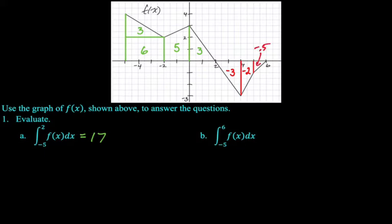So what we want to do is we want to take the 17 that we got from negative five to two and then add to that what we get from two to six. So it's 17 and then minus five point five, which I think is eleven point five. All right, let's see what the next question is.